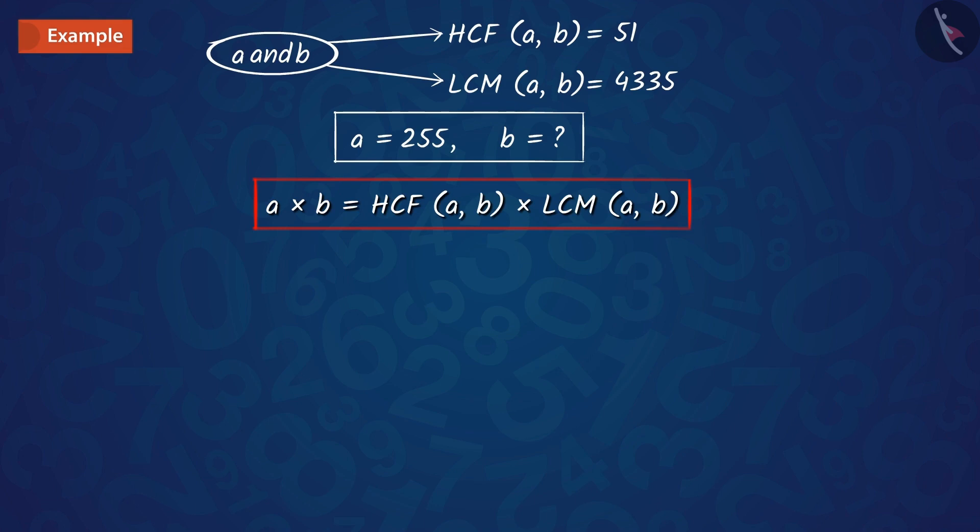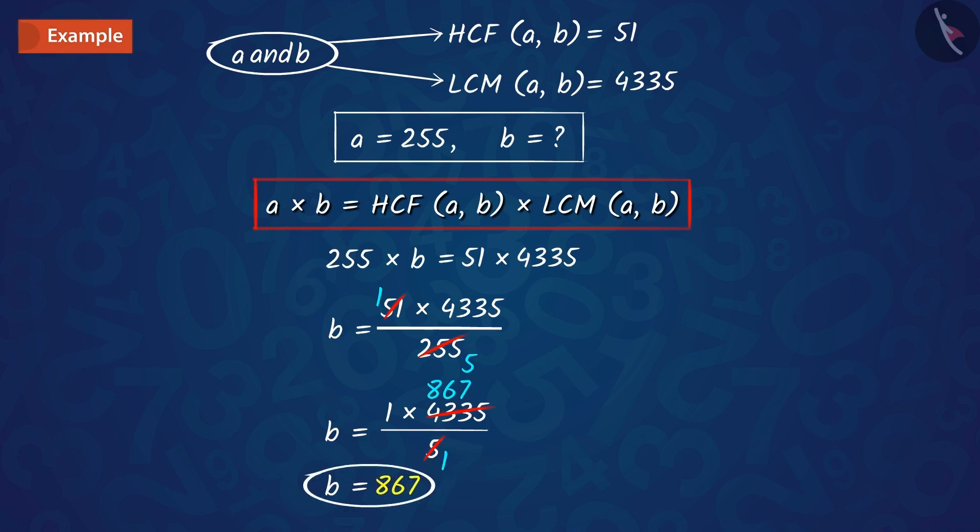Now, if we substitute these values given in the question in this formula and solve them, hence, the value of B will be 867.